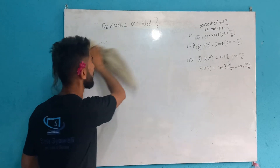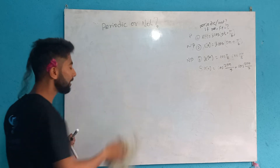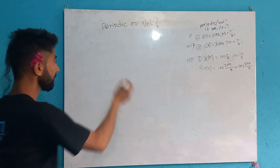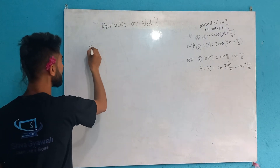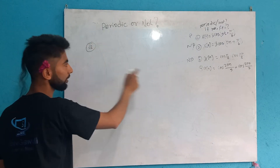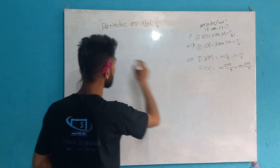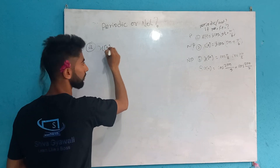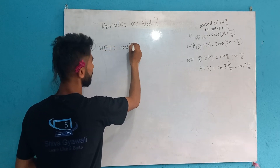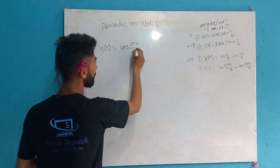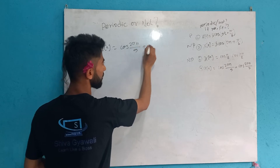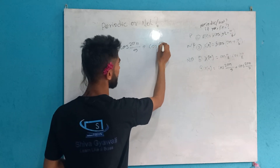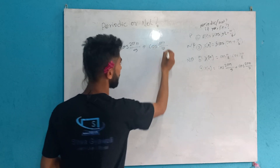Now I have to ask the last question: is this signal periodic or non-periodic? Let's do this. Last question: x[n] = cos(2πn/5) + cos(2πn/7).